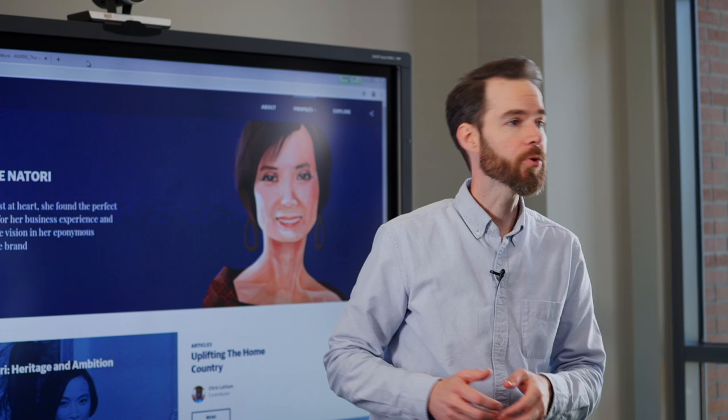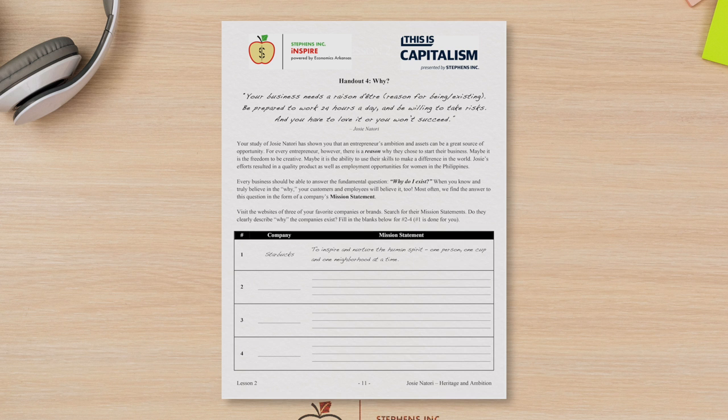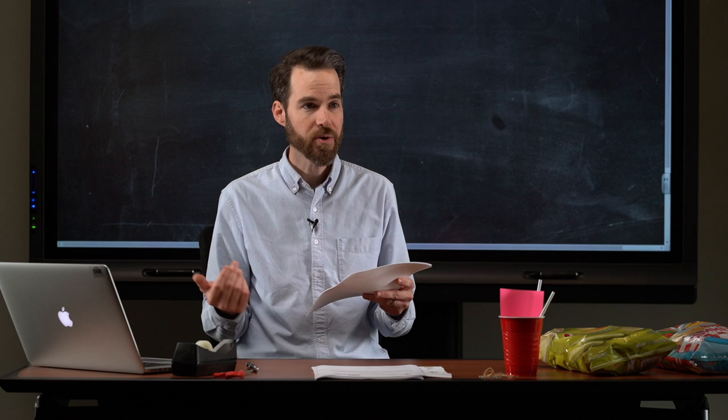Finally, Lesson 2 concludes with an optional extension activity on Handout 4, Why? This can be completed in class or as a homework assignment. Your study of Josie Natori has shown you that an entrepreneur's ambition and assets can be a great source of opportunity. For every entrepreneur, however, there is a reason why they chose to start their business. Maybe it is the freedom to be creative. Maybe it is the ability to use their skills to make a difference in the world. Josie's efforts resulted in a quality product as well as employment opportunities for women in the Philippines. Every business should be able to answer the fundamental question, Why do I exist? When you know and truly believe in the why, your customers and employees will believe it too. Most often, we find the answer to this question in the form of a company's mission statement.